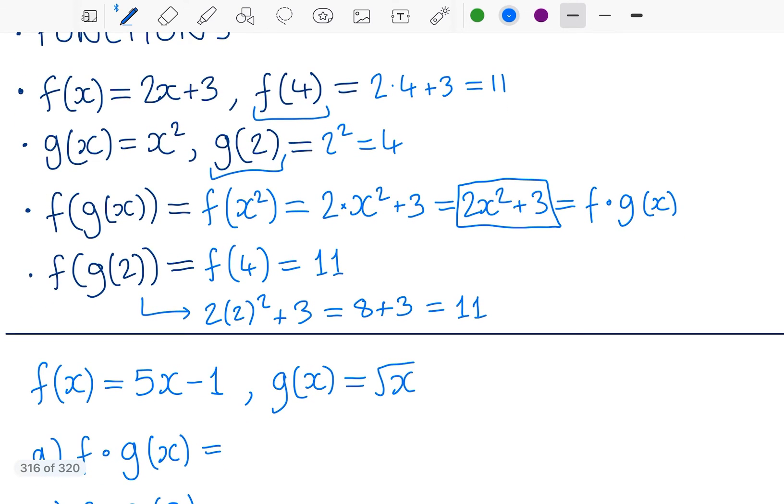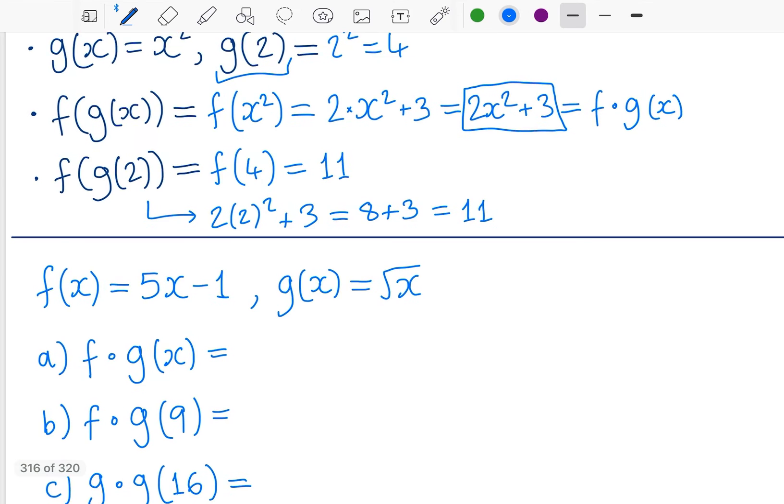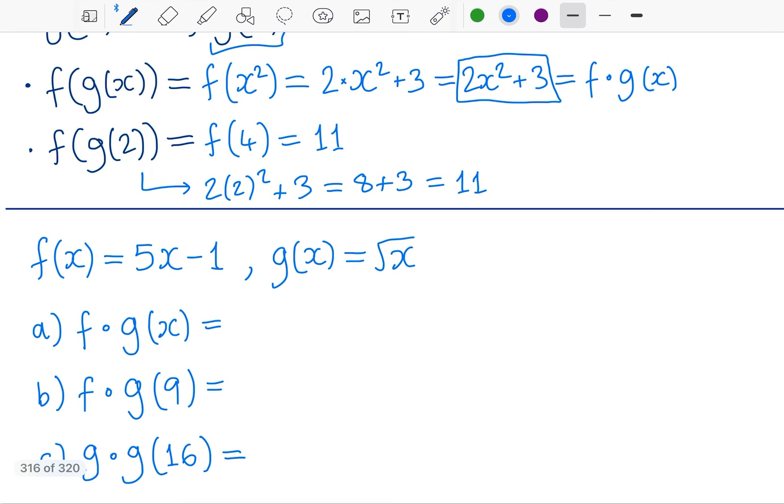So you can basically find the final composite function itself and then plug in the number, or you can just plug it into the inner function, and then take that answer and plug it into the outer function. Either is fine, it probably depends on what you've done in the previous part of the question as well.